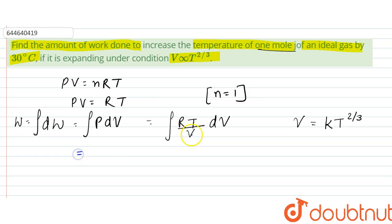When we input this, R is constant and k is constant, which get factored out. From here, dV equals 2/3 times k times T to the power minus 1/3 times dT. Instead of writing V, we can write this value.